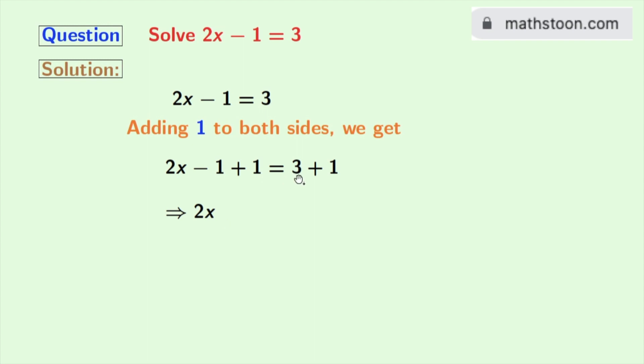And in the right hand side, we have 3 plus 1 which is equal to 4. So finally, we have 2x is equal to 4.